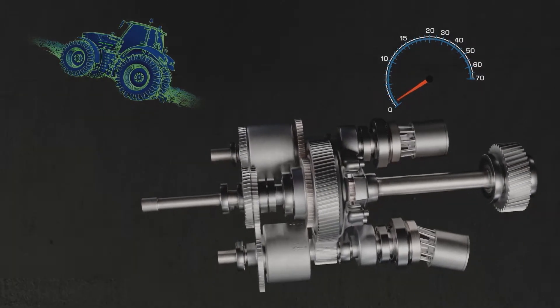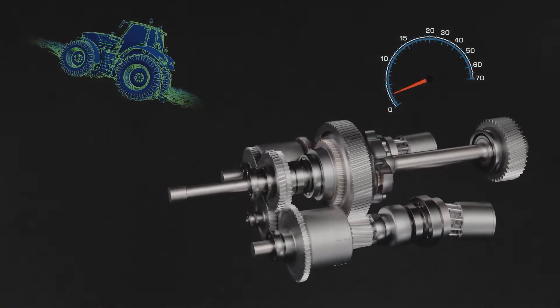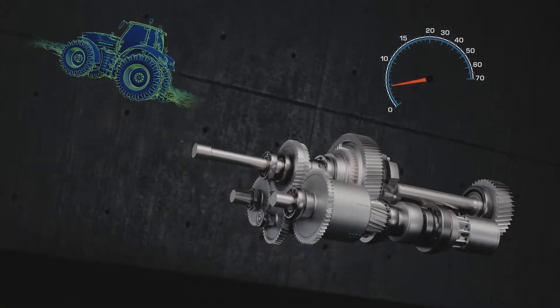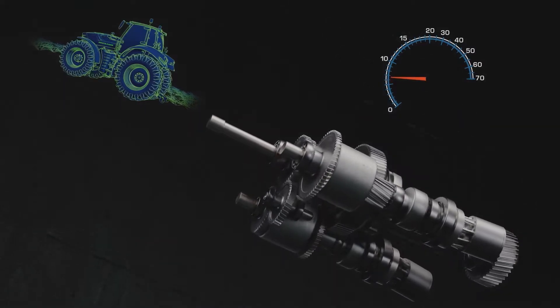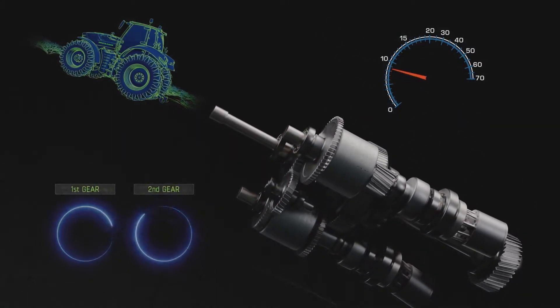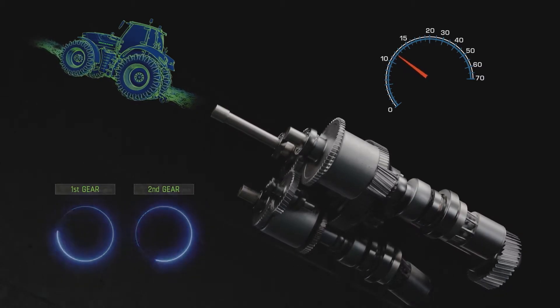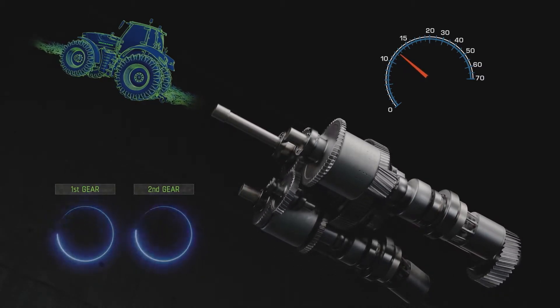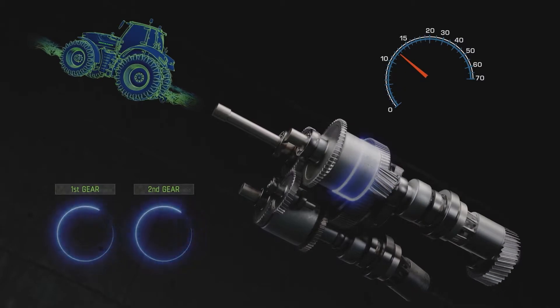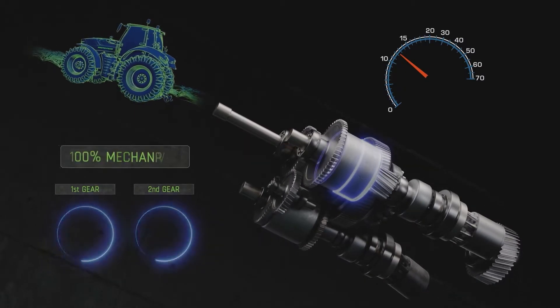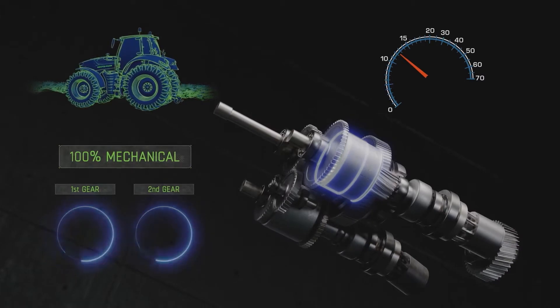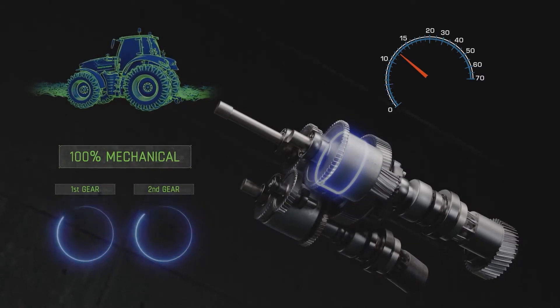If you now want to accelerate, this is done in the first range, without any mechanical shifting and always jerk-free. During the rapid acceleration of the tractor, the rotation speeds of the range clutches converge until perfect synchronous running is achieved. Here, the transmission changes to the second gear automatically. The change takes place within fractions of a second. The driver does not notice this.